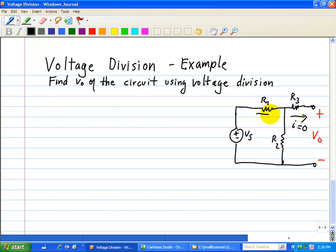So all of the current that flows into this node goes here and then goes out through R3. Therefore, this is connected in series. Therefore, VO is equal to VS, using the voltage division principle, R2 divided by R1 plus R2.